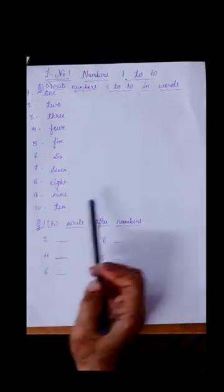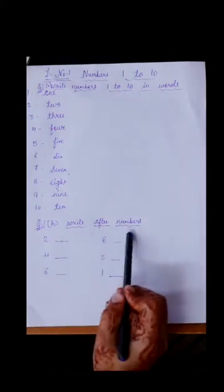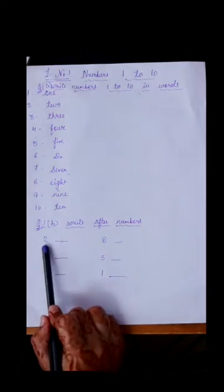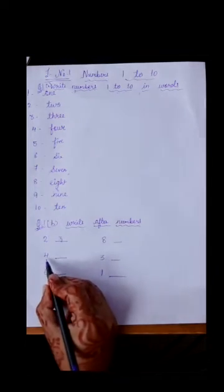Now we are going to study after numbers. The after number of two will be three, the after number of four will be five, six will be seven, eight will be nine, three will be four, and one